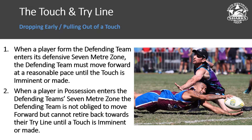This may lead to an attacker rolling the ball thinking they're about to be touched when they're not. When a player in possession enters the defending team's seven metre zone, the defending team is not obliged to move forward anymore, but they cannot retire back towards their try line until the touch is imminent or made. There is no such thing as pulling out of a touch in terms of the rule book. We may not believe it's in the best interest of the game, but that's not up to us to decide.